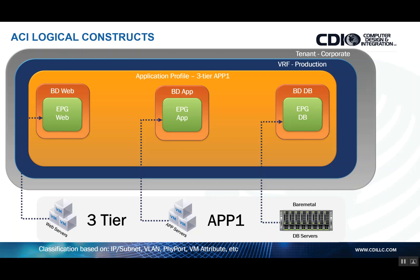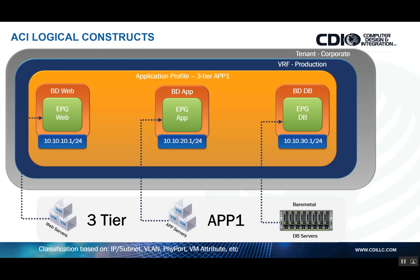We also have something called a bridge domain, which each EPG in this particular case is tied to. The bridge domain represents a Layer 2 forwarding construct. You can have a single bridge domain with multiple EPGs as well. The reason for this particular design — tying each endpoint group to its own bridge domain — is for flexibility with Layer 4 through 7 service insertion, which I'll touch on shortly. We also define our subnets on the actual bridge domain, which is common if you want to leverage the ACI fabric as a Layer 3 fabric. This gateway address becomes the default gateway for the web EPG, and you can define multiple subnets and default gateways under each bridge domain.